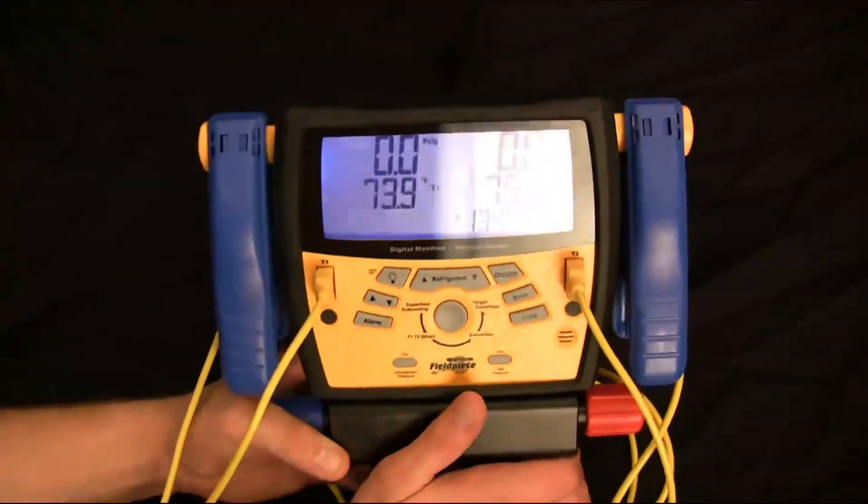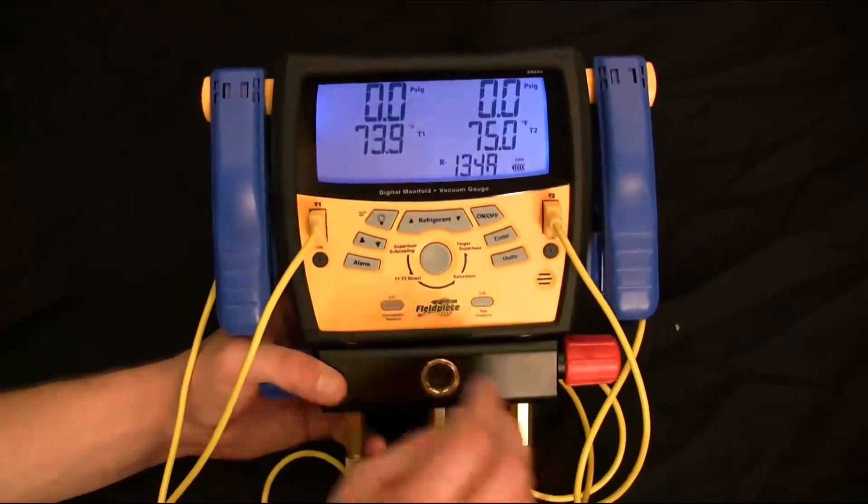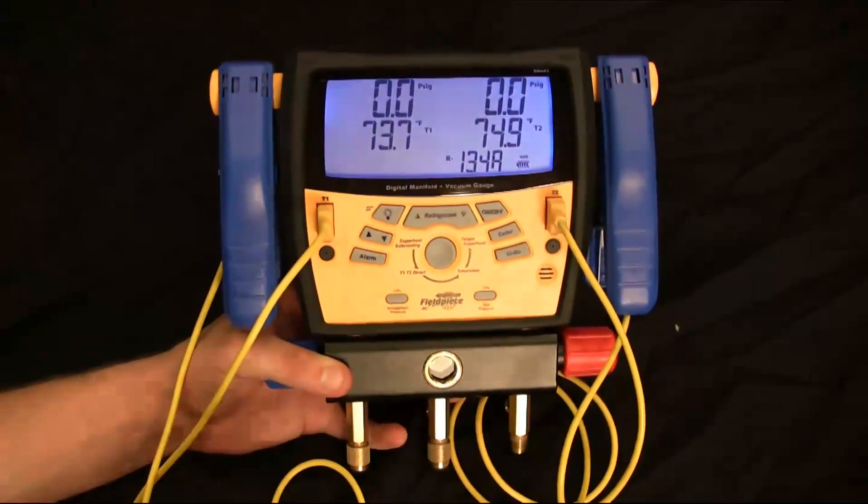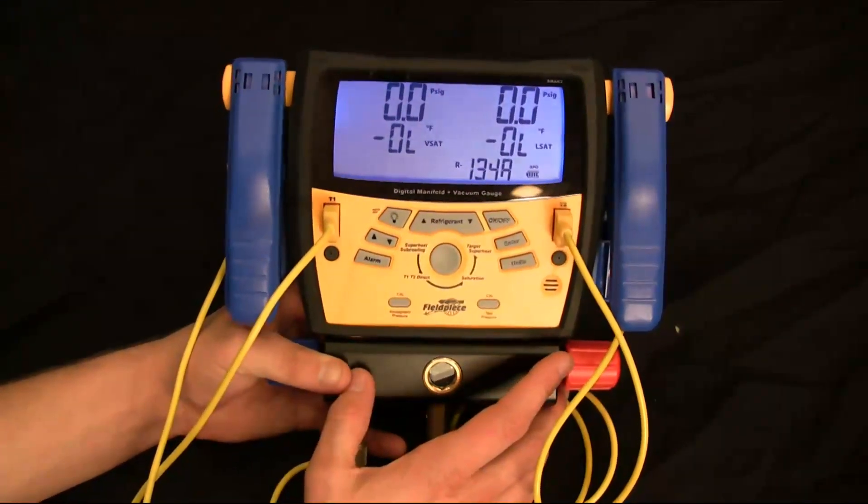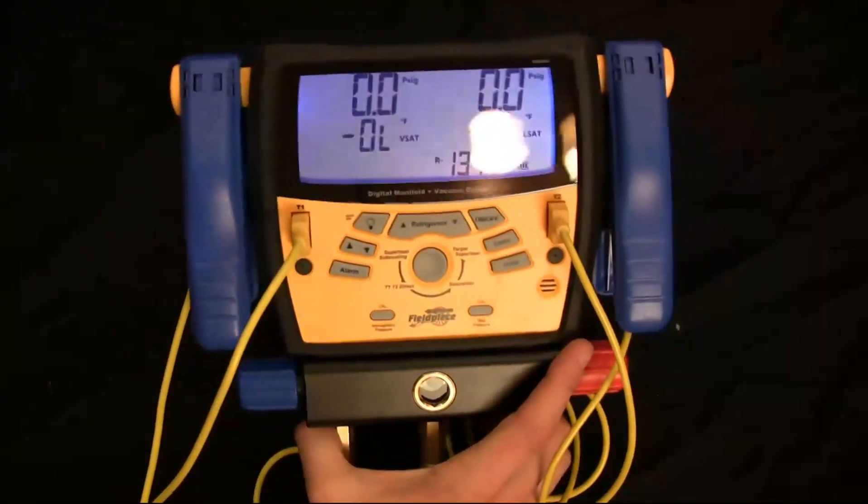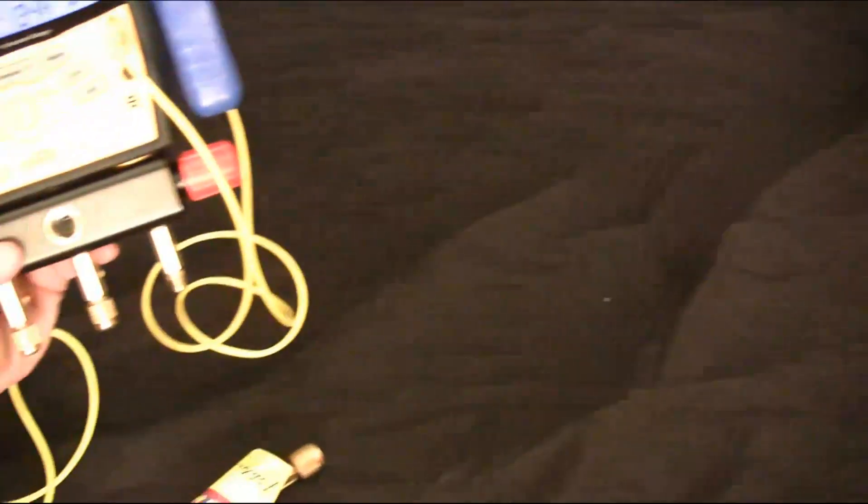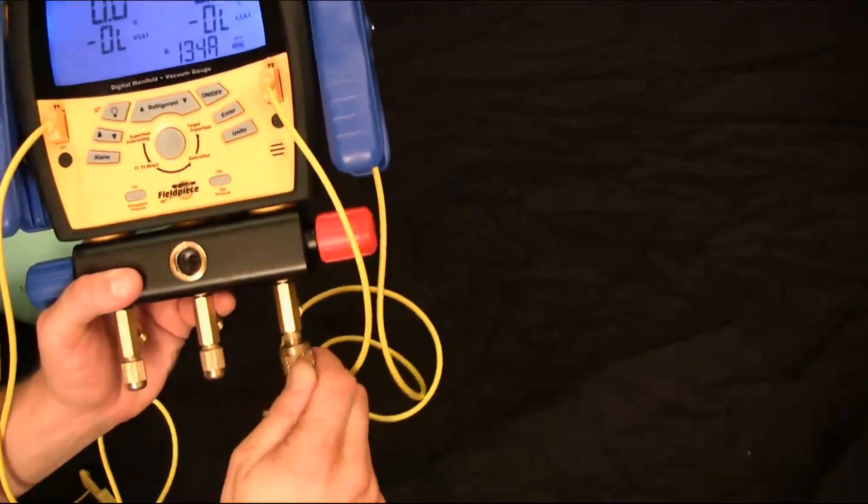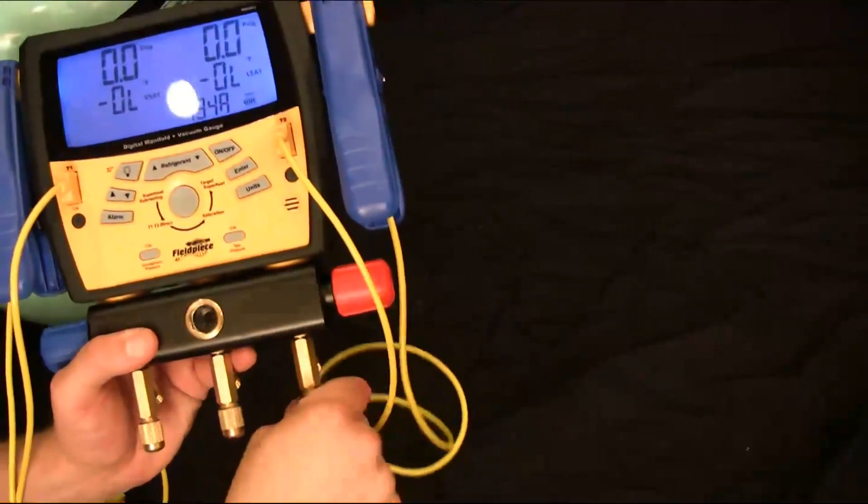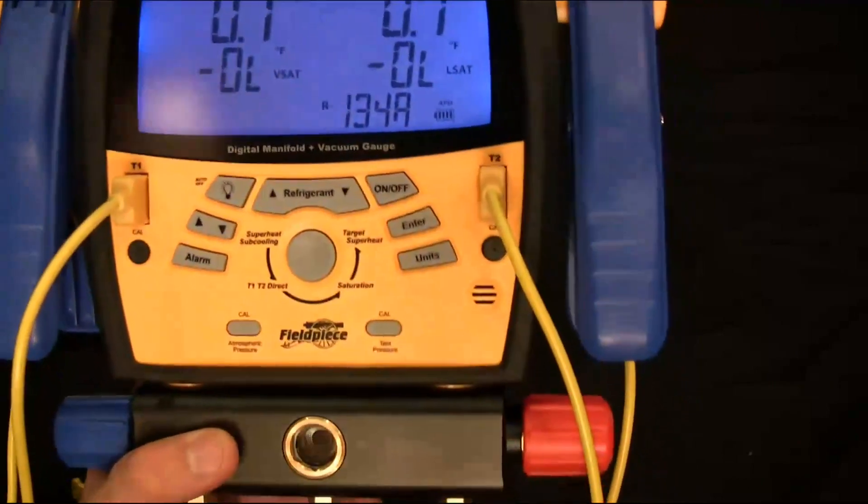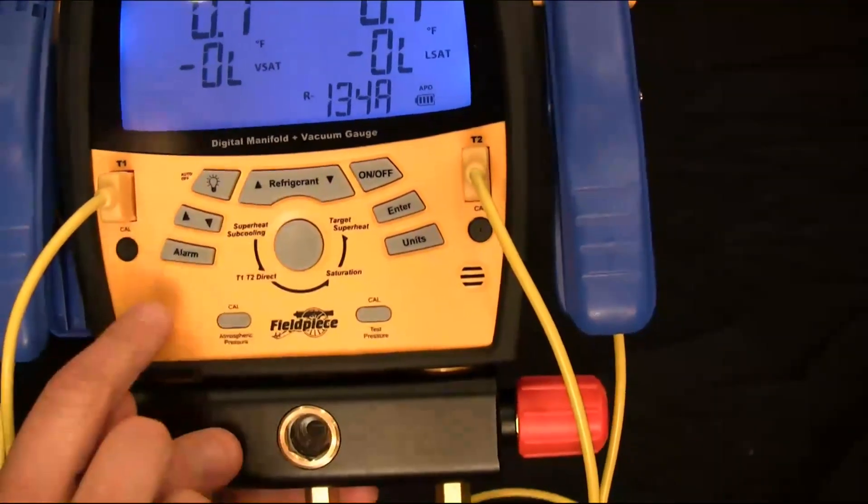So the manifold also comes with wet and dry bulb thermocouples that you could plug into these ports and use them for taking your wet and dry bulbs. All right. So next mode is your vapor saturation temperature mode. If I hook this up to a bottle of refrigerant, I have a bottle of 134A right over here. And I'm just going to hook it up. And I do have my refrigerant set for 134.